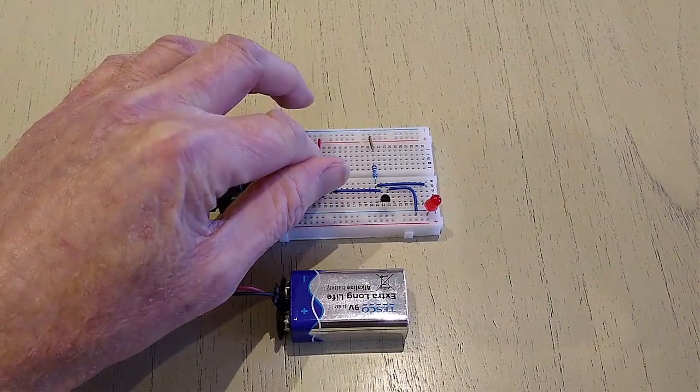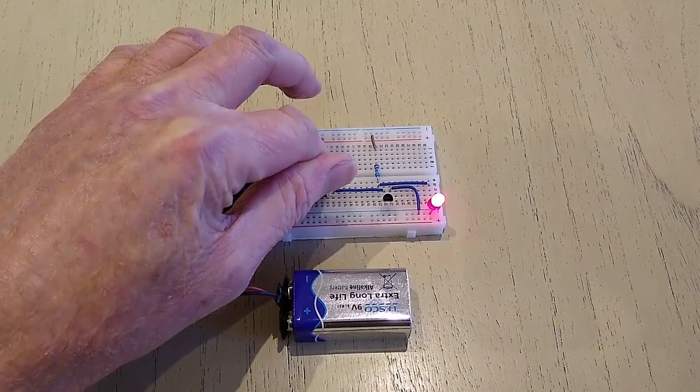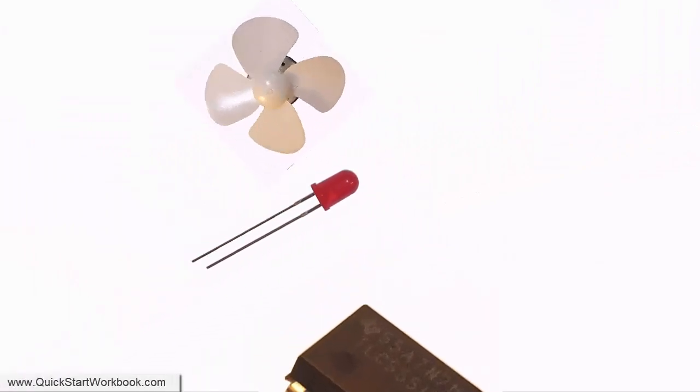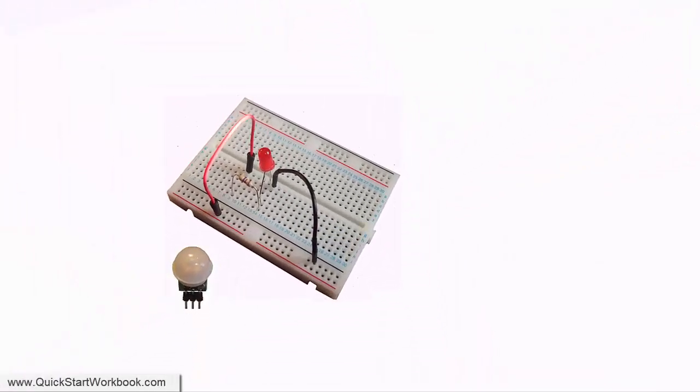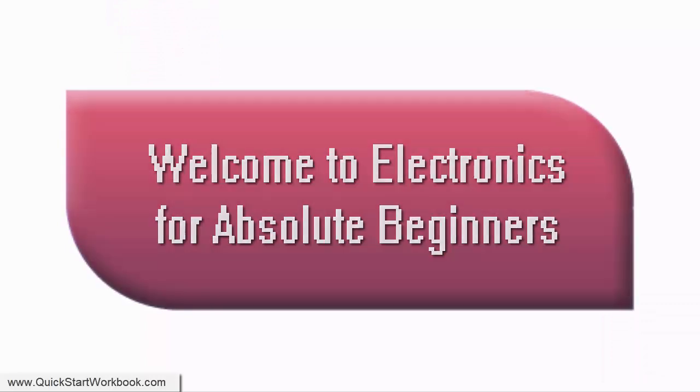In this short video we'll examine how to build a NOT gate on a breadboard using a bipolar junction transistor. Welcome to Electronics for Absolute Beginners.